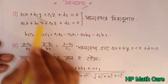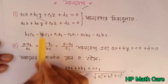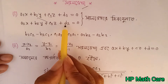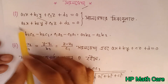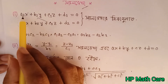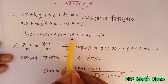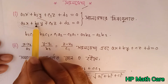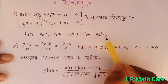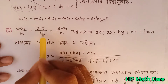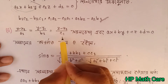The direction ratios are given by the column: B1C2 minus B2C1, comma, C1A2 minus C2A1, comma, A1B2 minus A2B1. That means the symmetric form of the line is: x minus x1 by A1 equals y minus y1 by B1 equals z minus z1 by C1.